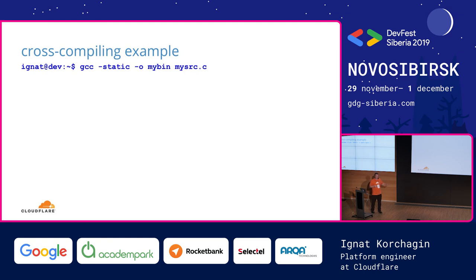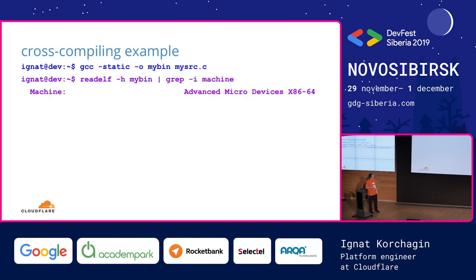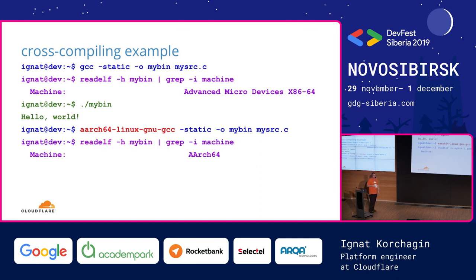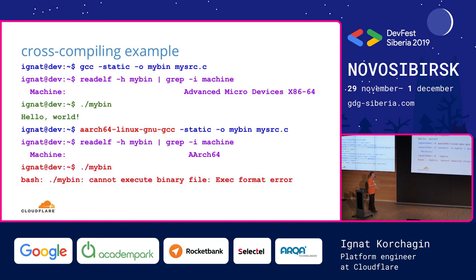Here's a small example — I promise I copy-pasted it from a real terminal. If you have a source file and invoke your compiler, it produces a binary. You can inspect it and see it's for x86 architecture, and you can run it locally. If you want to port this code to ARM, you replace your compiler with a cross-compiler. It produces a binary for ARM64 architecture, and you cannot run it locally because your developer laptop doesn't know how to run ARM64 code.